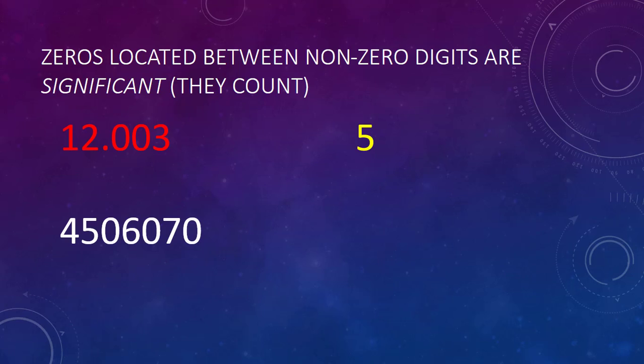So what about 4,506,070? Well, the zero between the five and the six, and the zero between the six and the seven, are between two non-zero numbers, so those are both significant. The zero at the end is not between two non-zero numbers, so it is considered a placeholder and is not significant. The other two non-zero numbers are of course significant, so that gives us a total of six significant figures in this number.